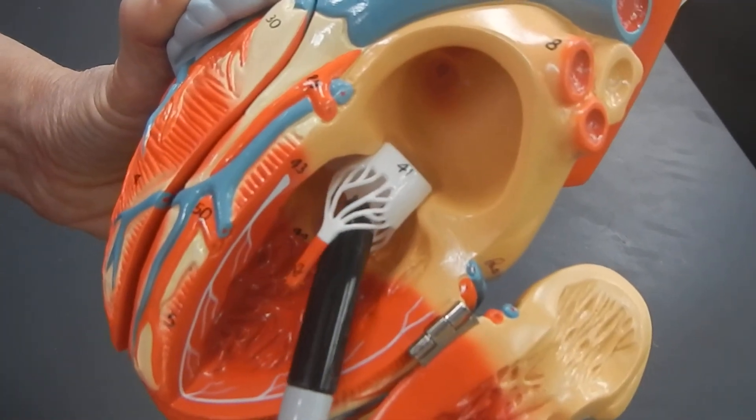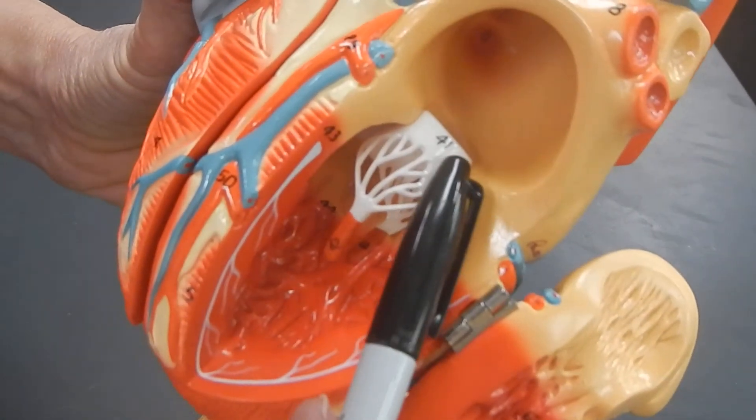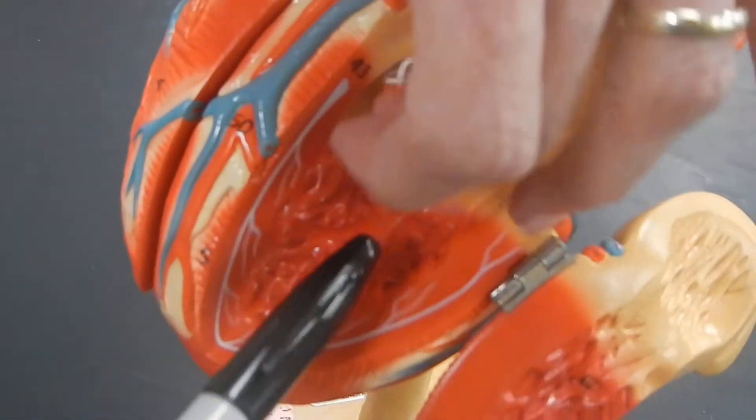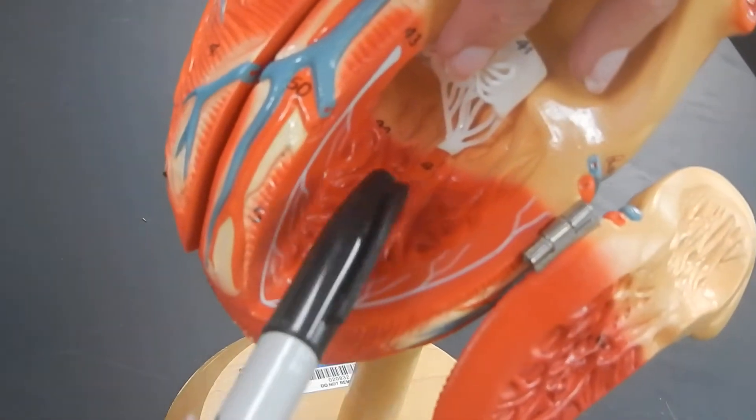And it also has got chordae tendinae, which attaches the valve to muscles, which are called papillary muscles.